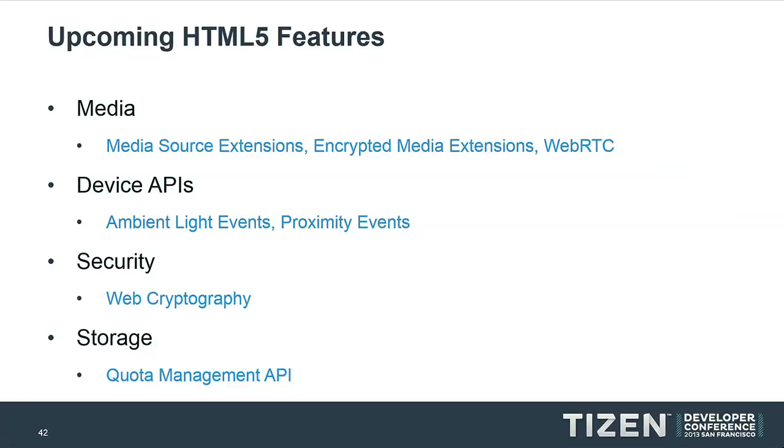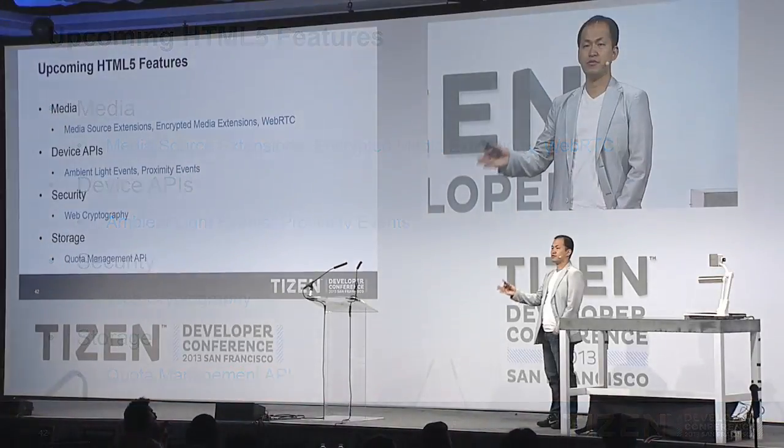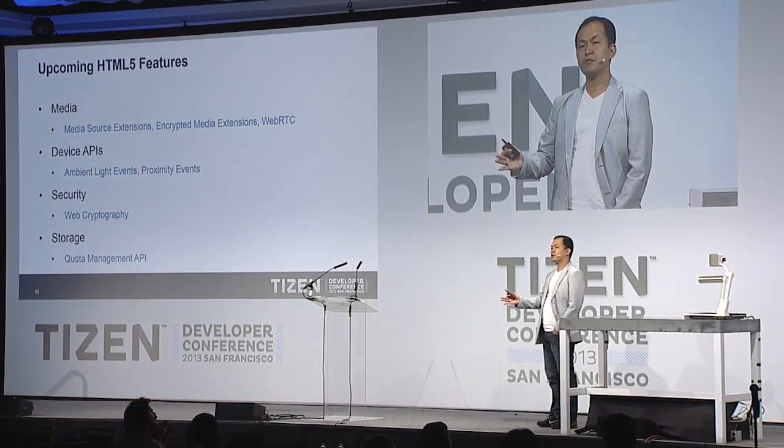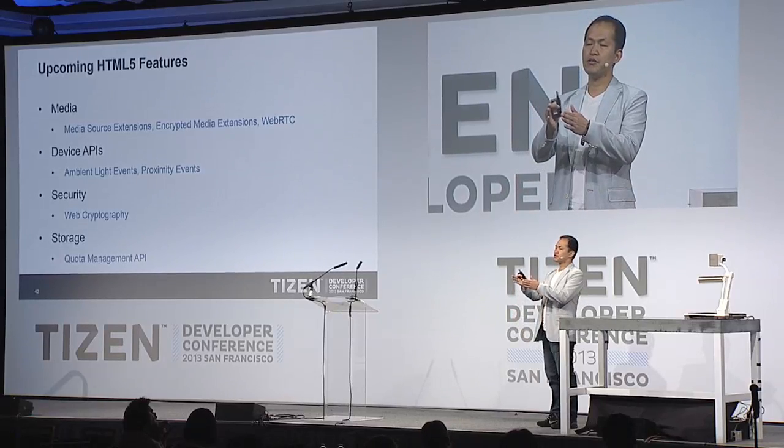Media Source Extensions are a really important feature for media streaming because they allow the web application to control the media source directly. For example, in a streaming scenario, if one server goes down or a network connection becomes poor, the web application can switch to another streaming server using the Media Source Extensions API.